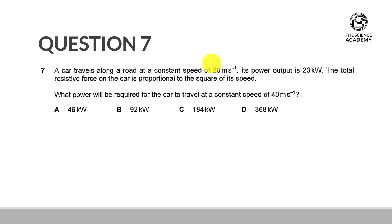In question 7, we are told that we have a car that travels along a road at a constant speed of 20 meters per second. The power output of the car is 23 kilowatts, and the total resistive force is proportional to the square of the speed.